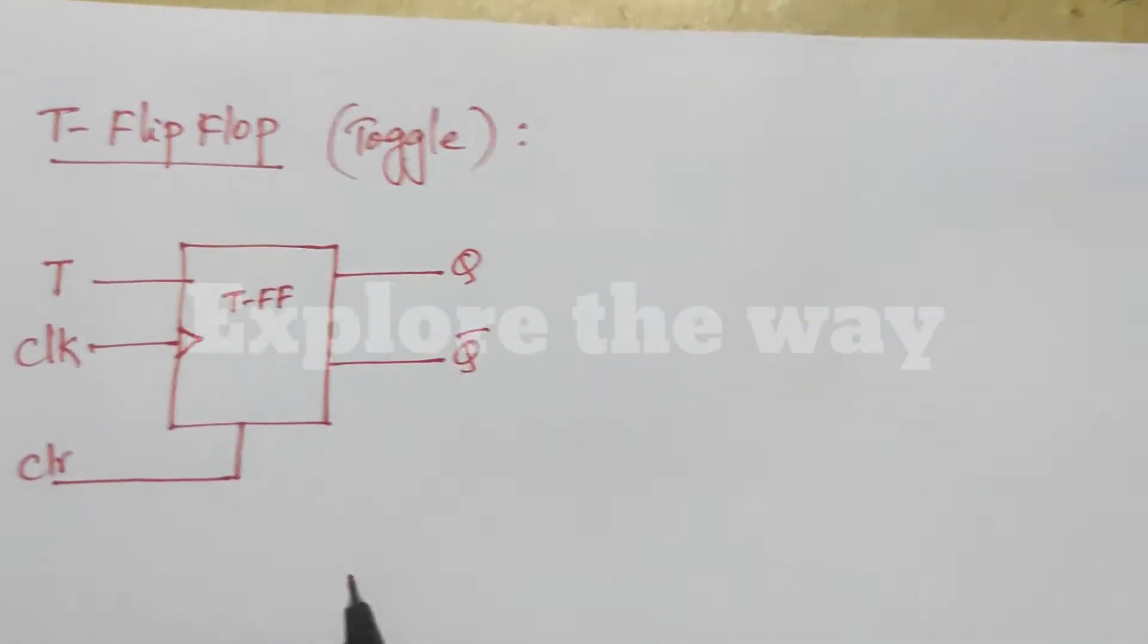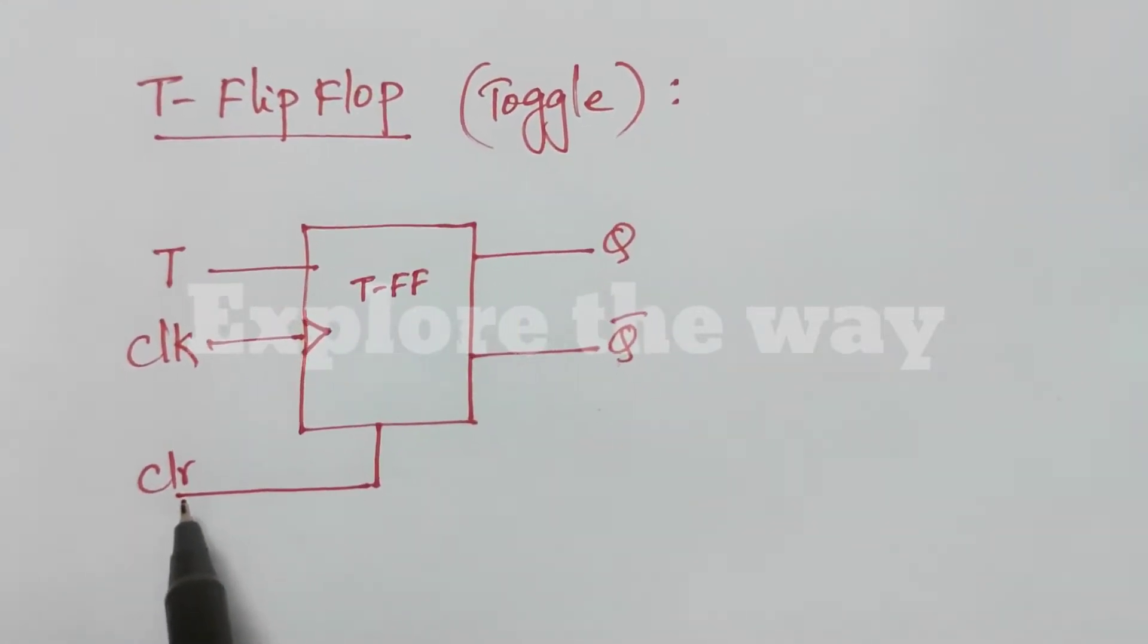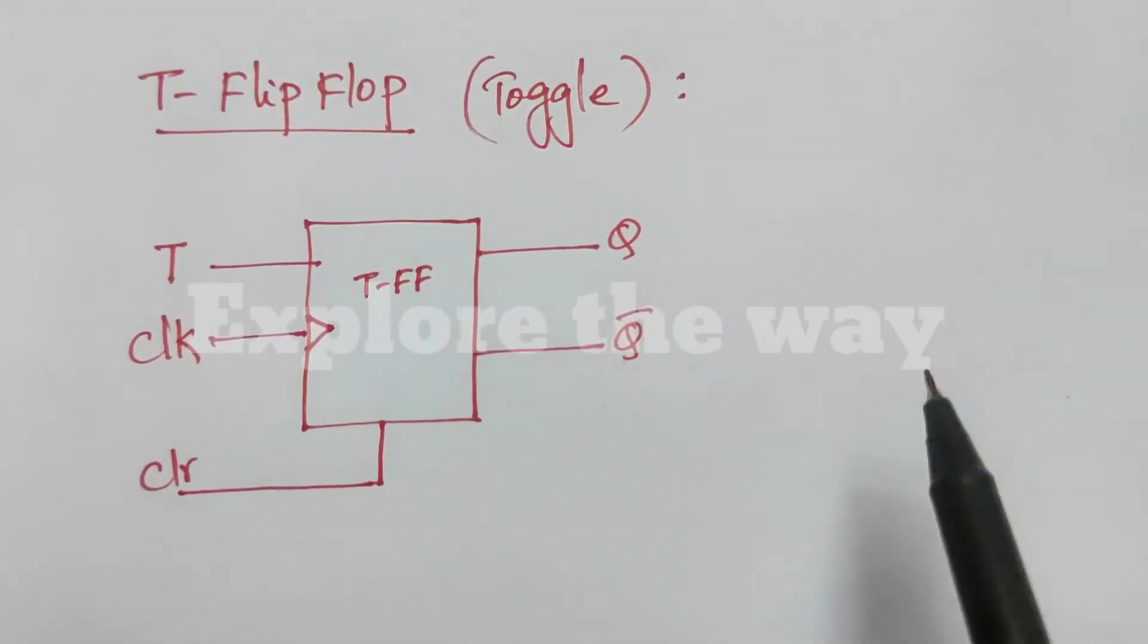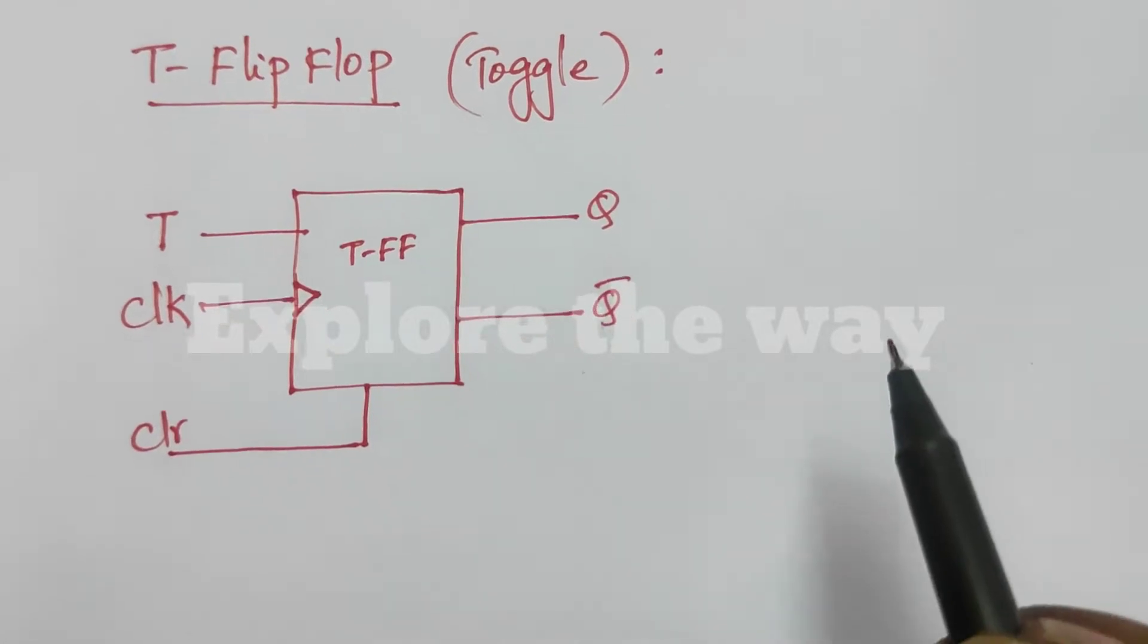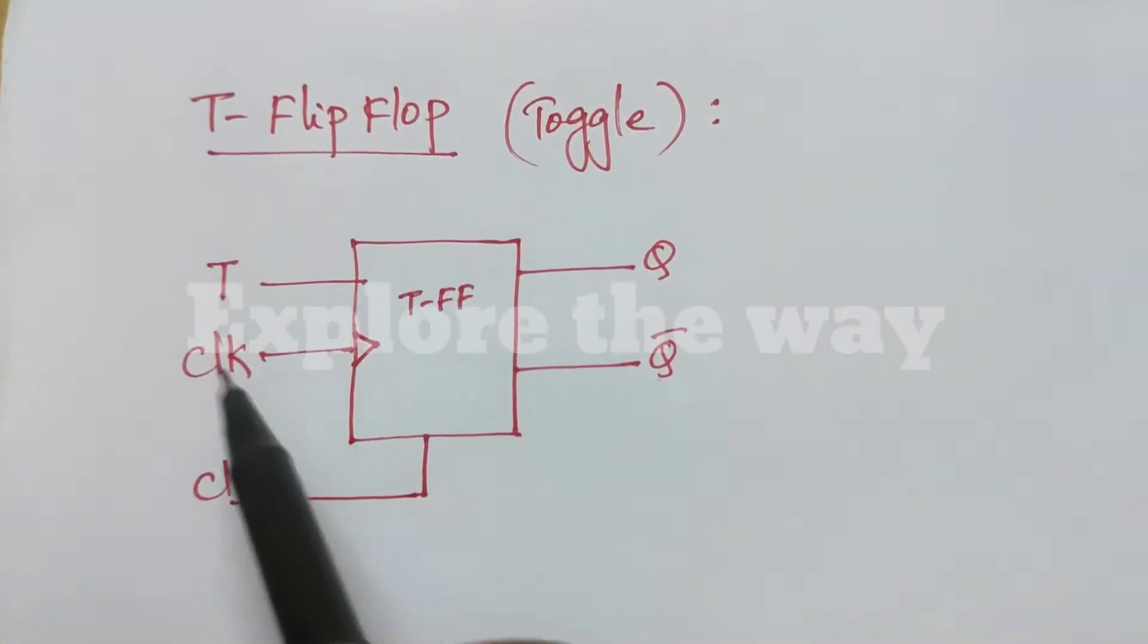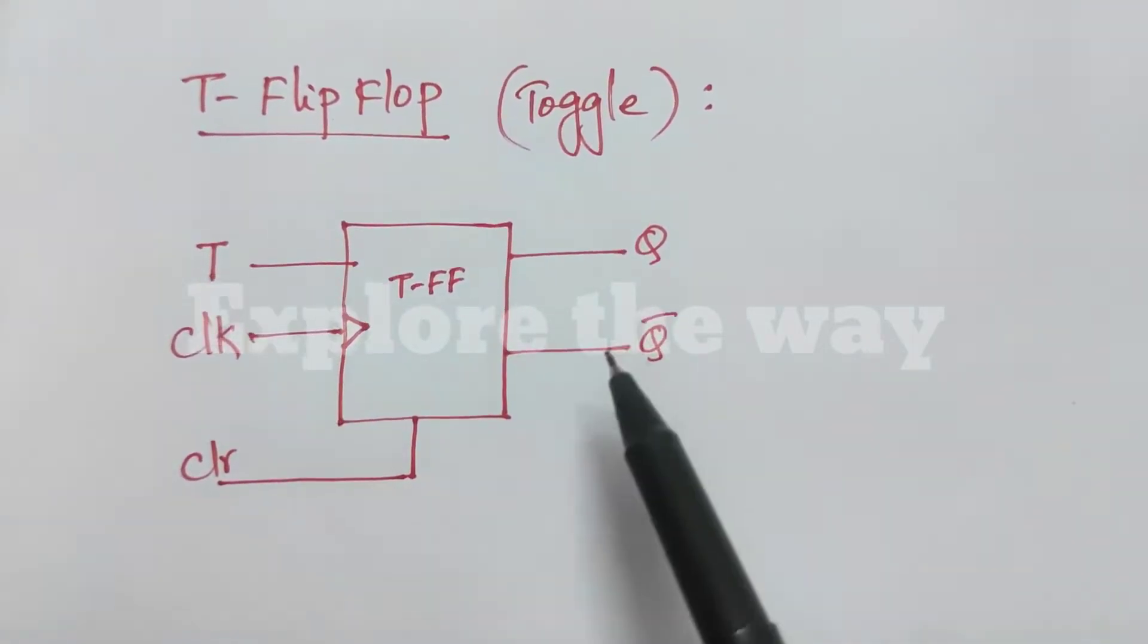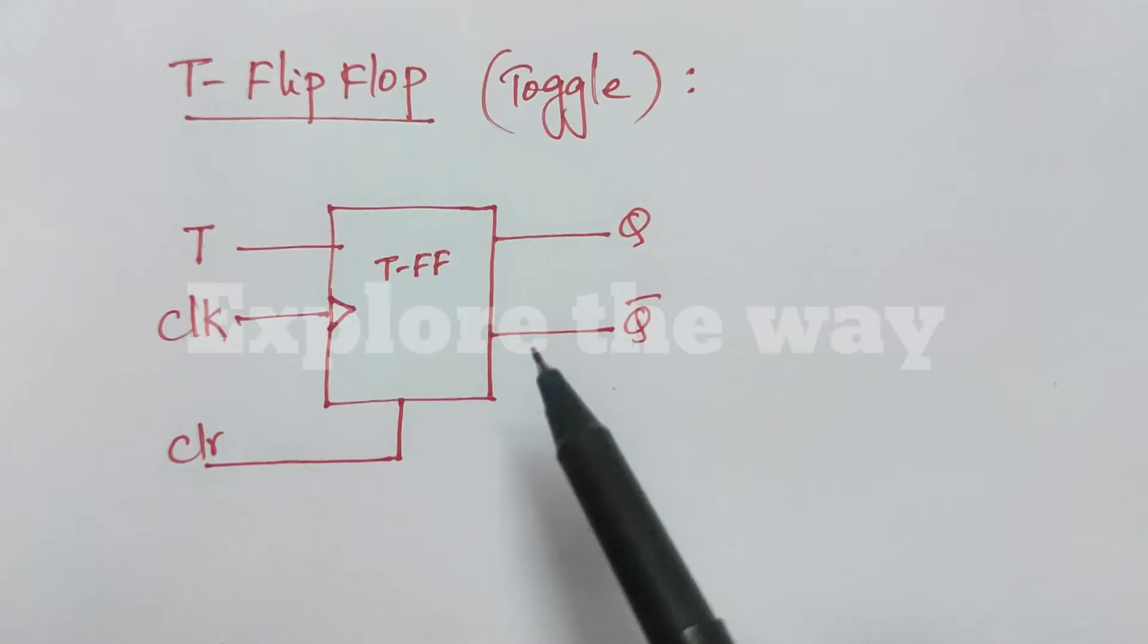Let us see the behavior of T flip-flop. When clear input is enabled, its output is cleared. That means Q will be 0. And when clear is not enabled, at the positive edge of clock, if T is 0, T flip-flop remains in previous state.